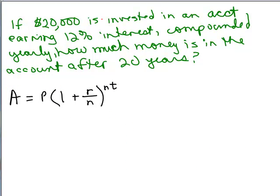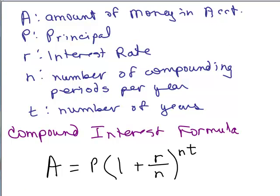If $20,000 is invested in an account earning 12% interest compounded yearly, how much money is in the account after 20 years? We need this formula. This is the compound interest formula. And remember, these are what these variables stand for in the compound interest formula.